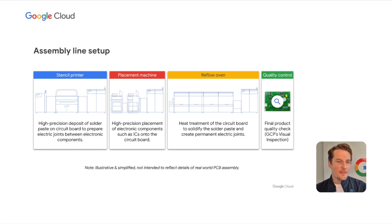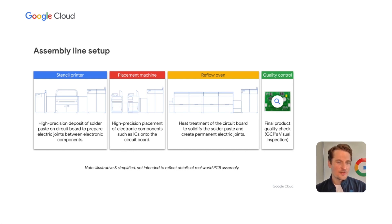At the end of the assembly line, Motion PCB has installed a visual inspection quality control station. This station leverages Google's Coral TPU modules to accelerate ML inferencing and was installed only a few months ago.